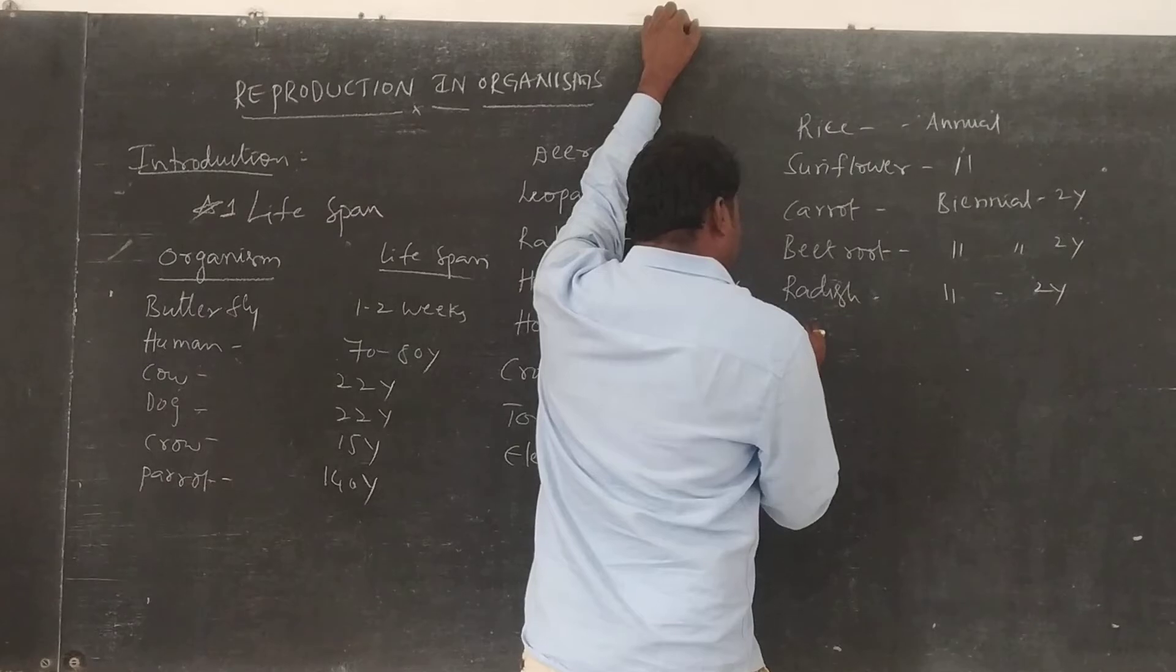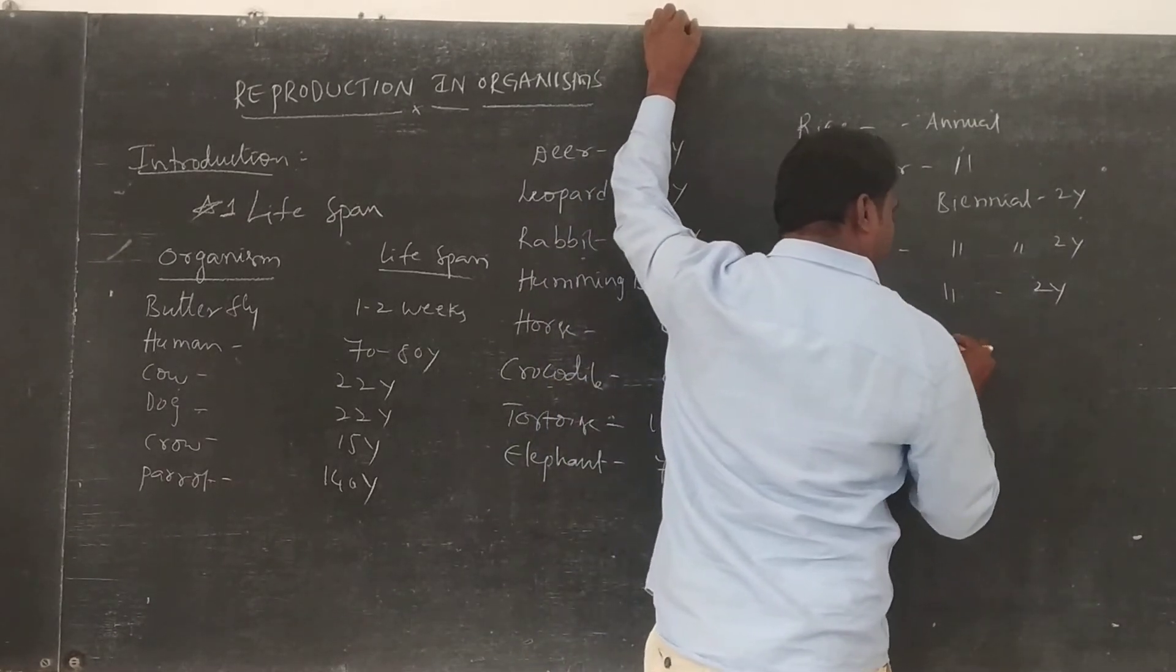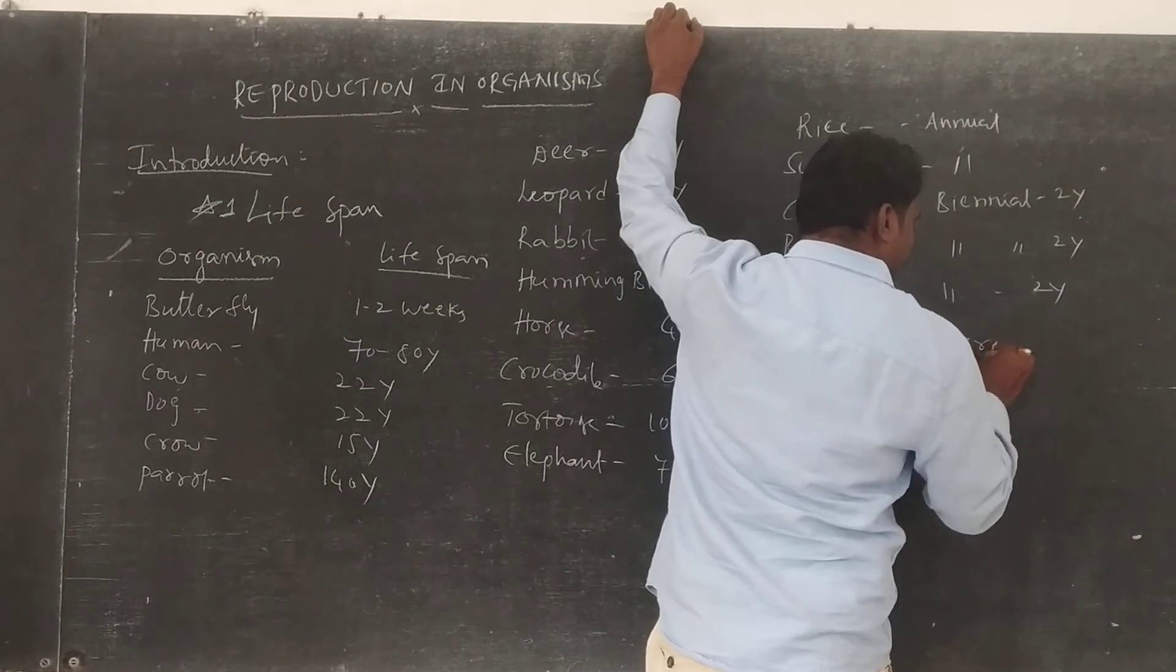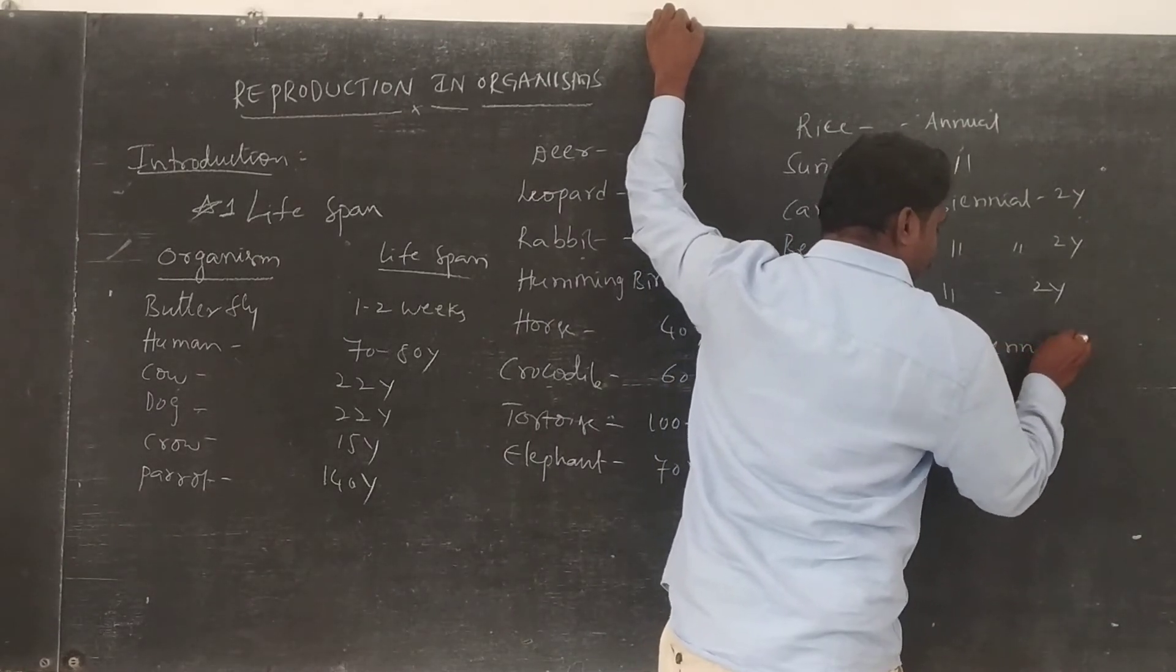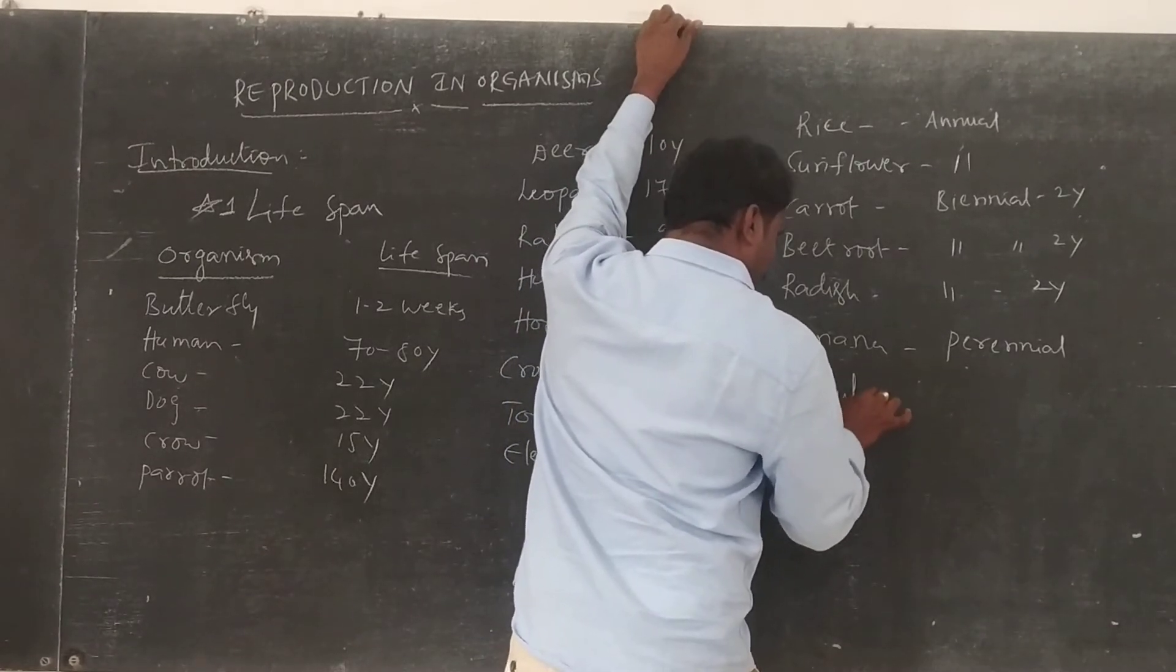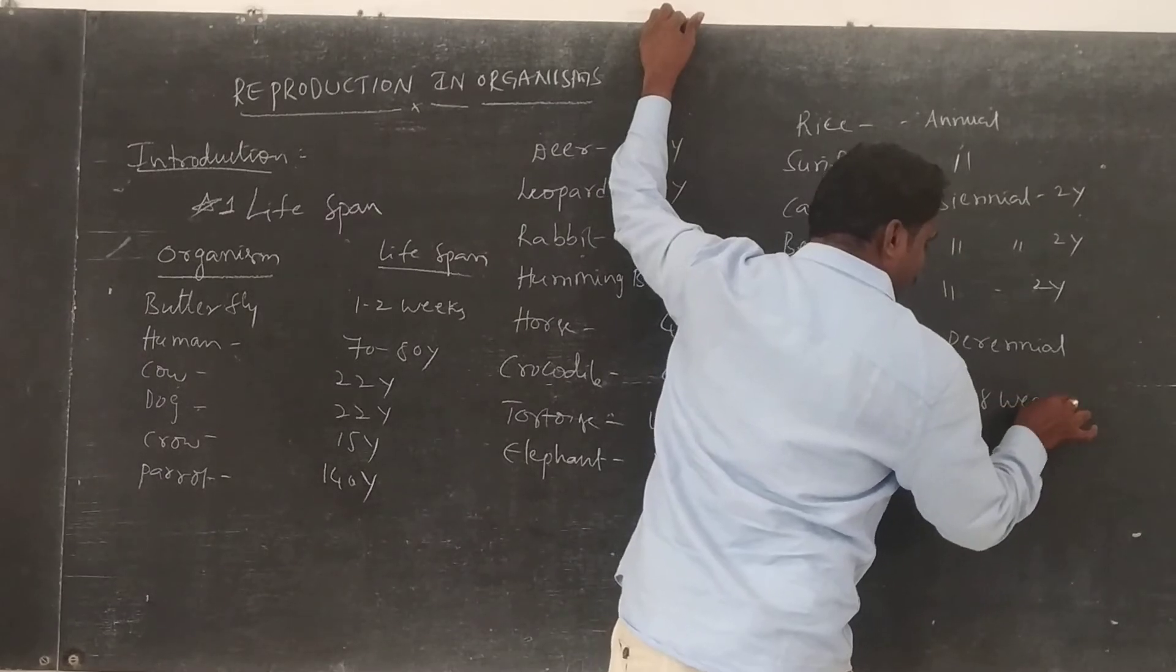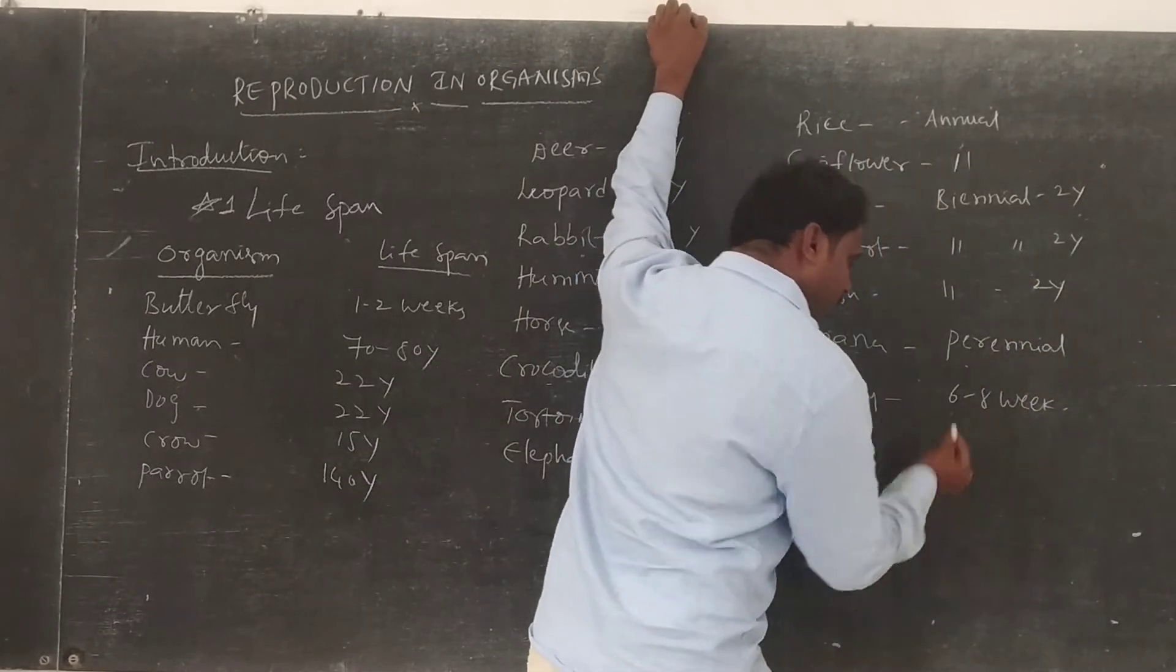Bamboo, perennial. Crepis, 6 to 8 weeks. It is also called ephemeral plant.